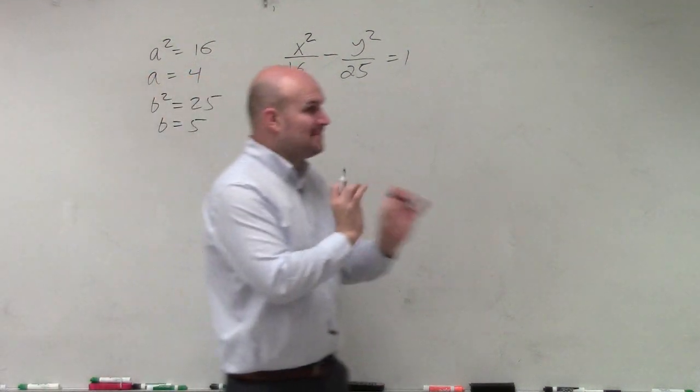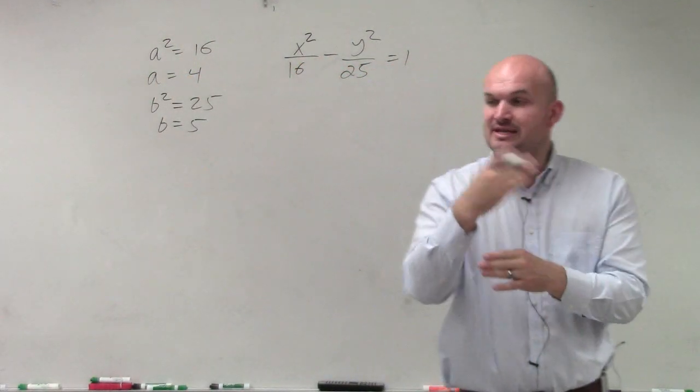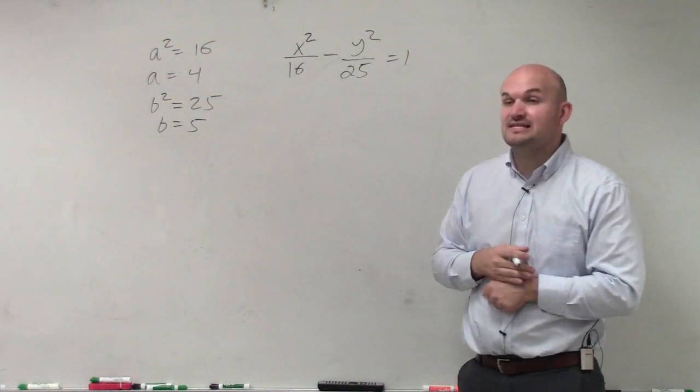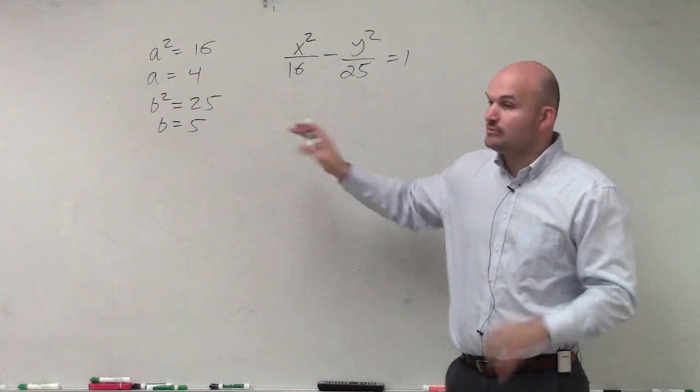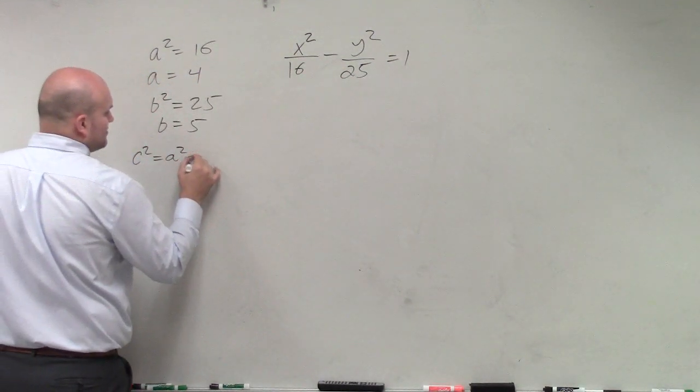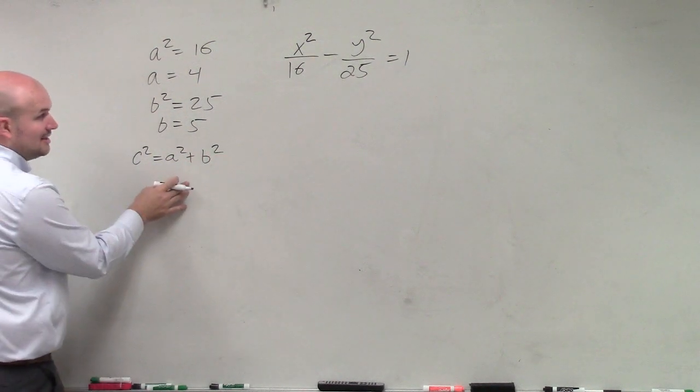Remember, a, b, and c represent the same thing. a is the distance from the center to your vertices. b is the distance from your center to your co-vertices. And then c is the distance from your center to your foci. So remember, the equation defines c. c squared equals a squared plus b squared. Different from an ellipse.